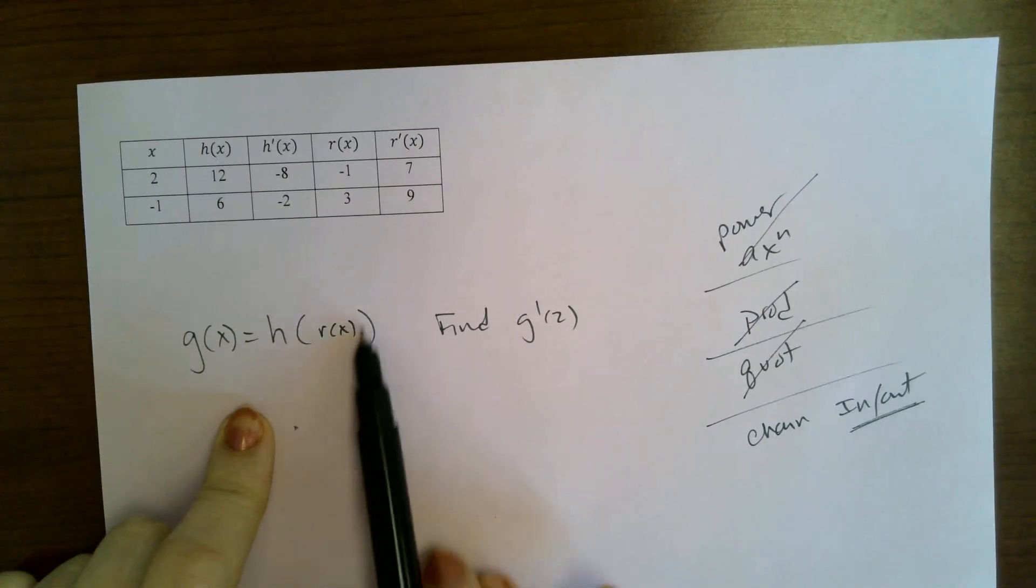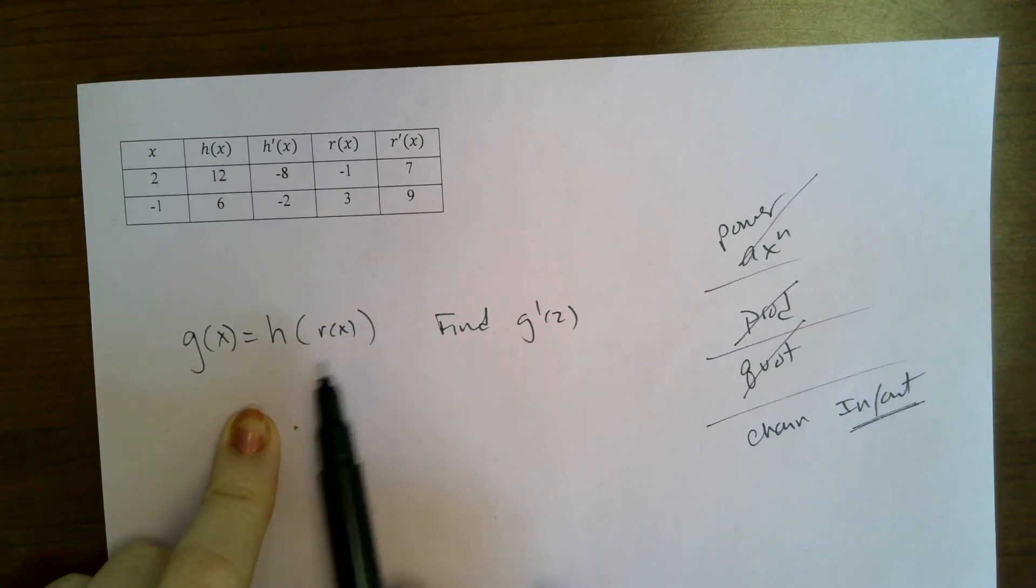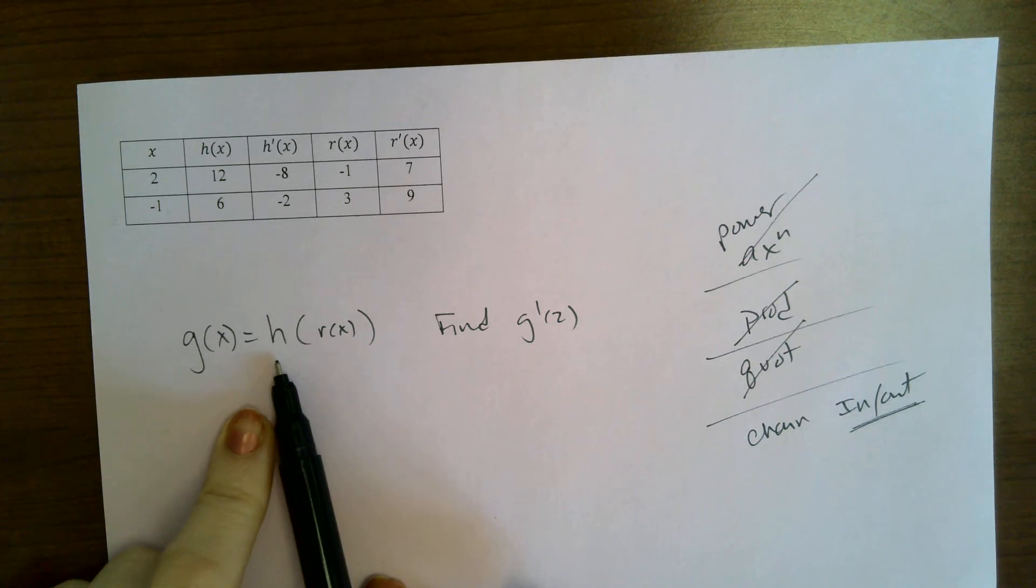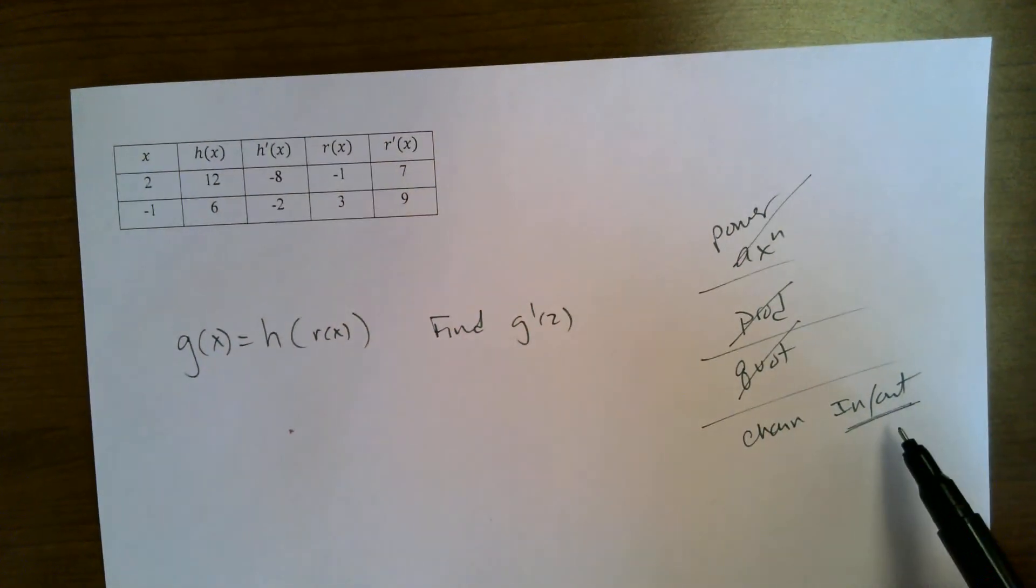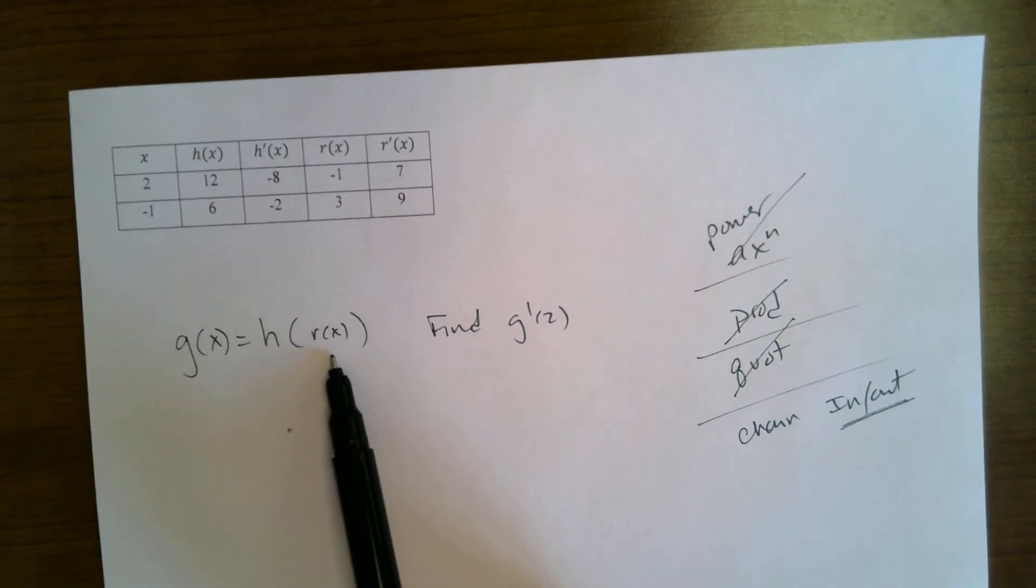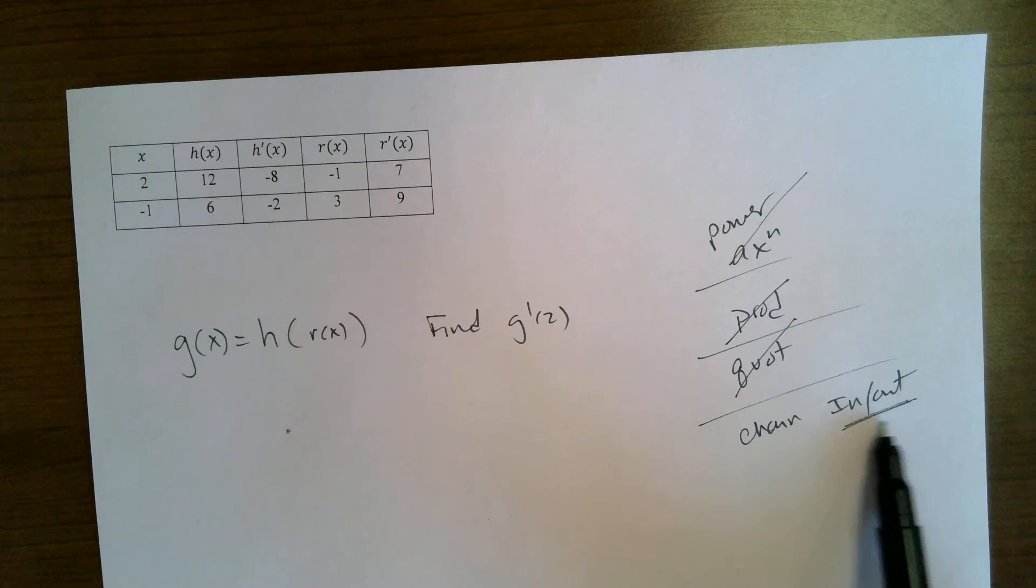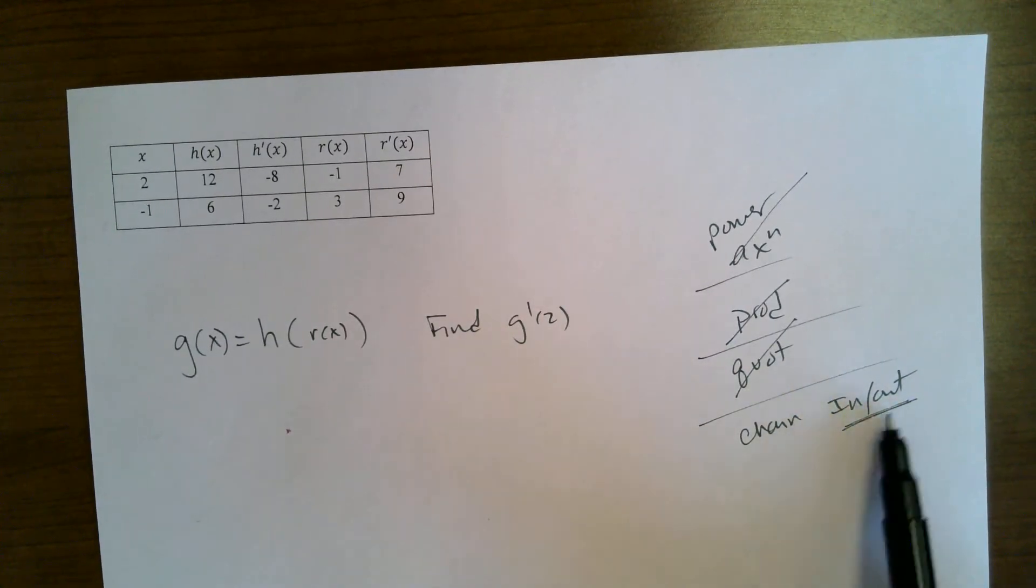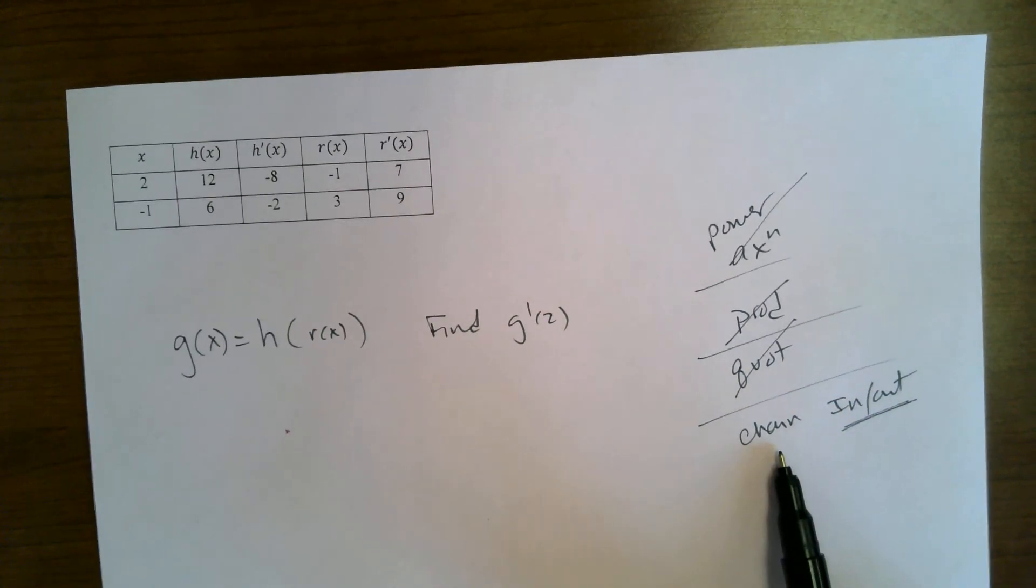This is going to require chain rule because we have a function that is inside of another. This r of x, that is a function, and it is inside of h of blank. Okay, so the input of h is itself another function, r. So since there's an inside and an outside function, this is chain rule.